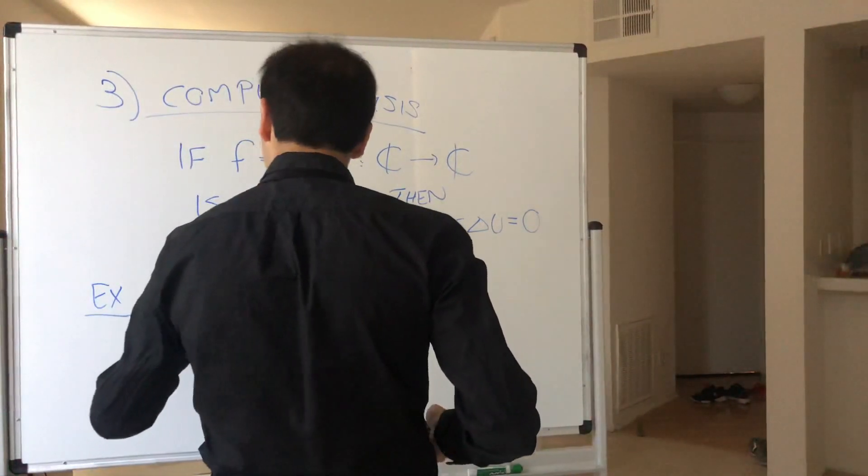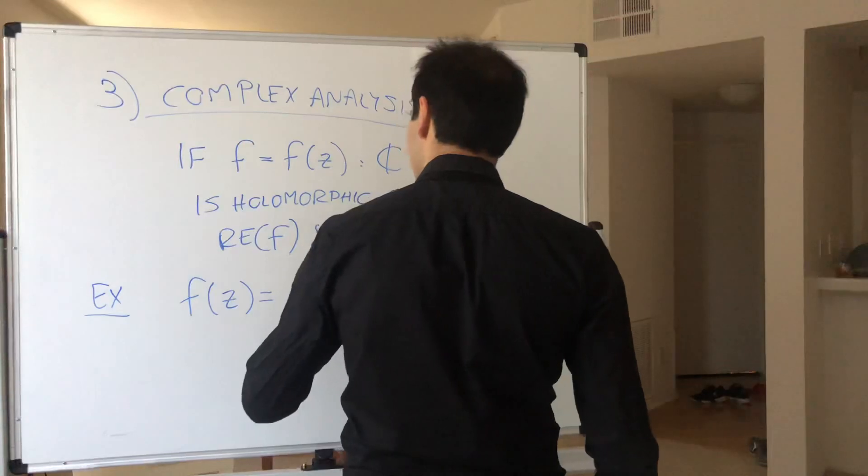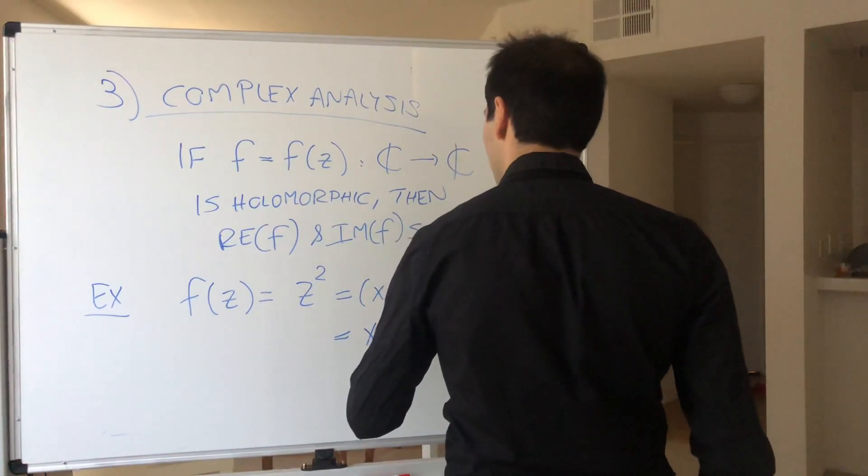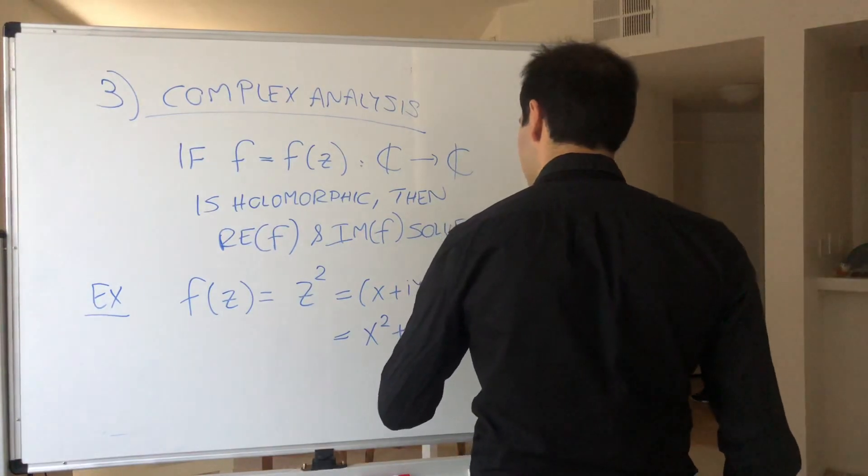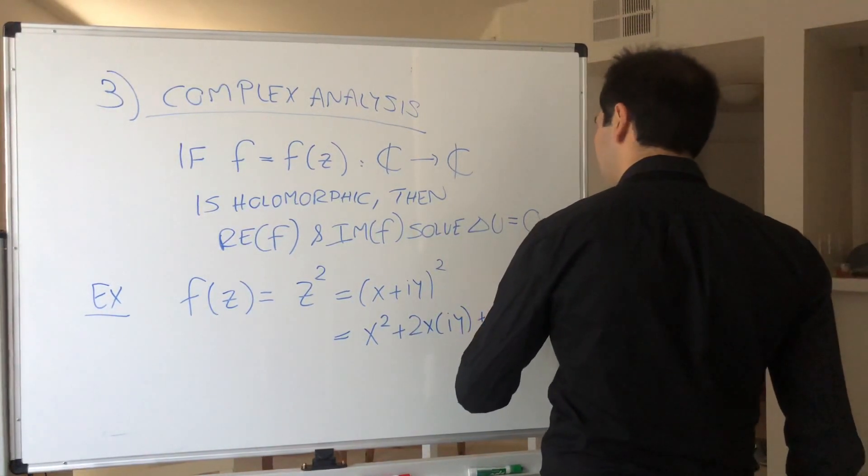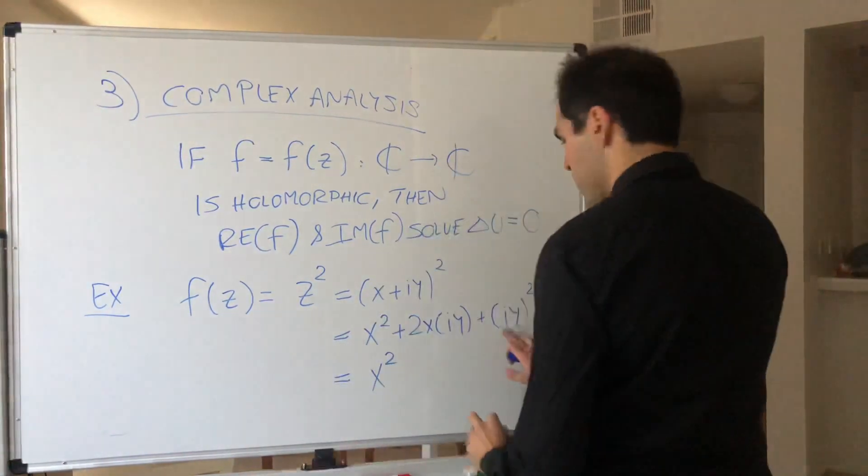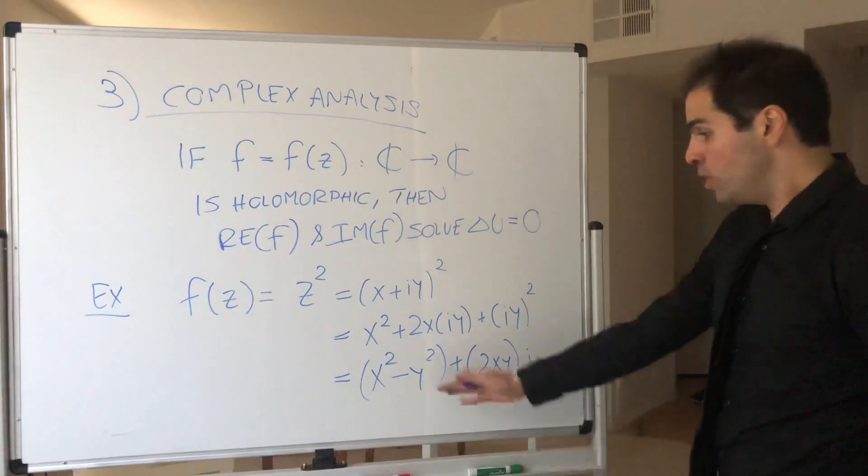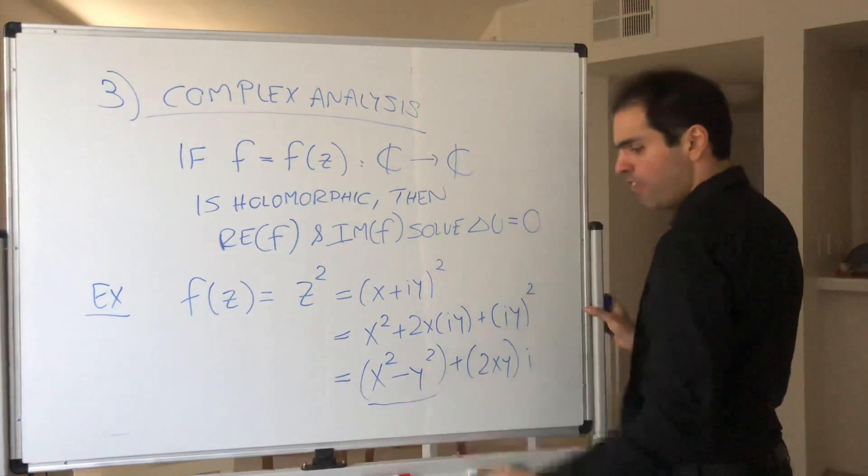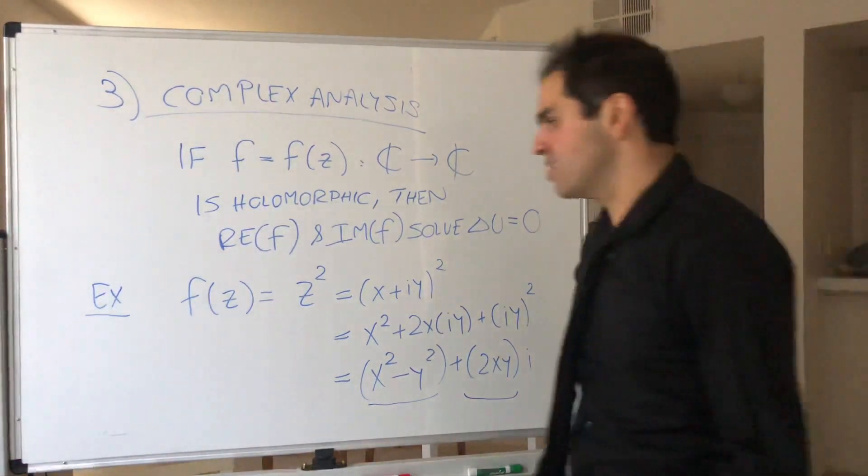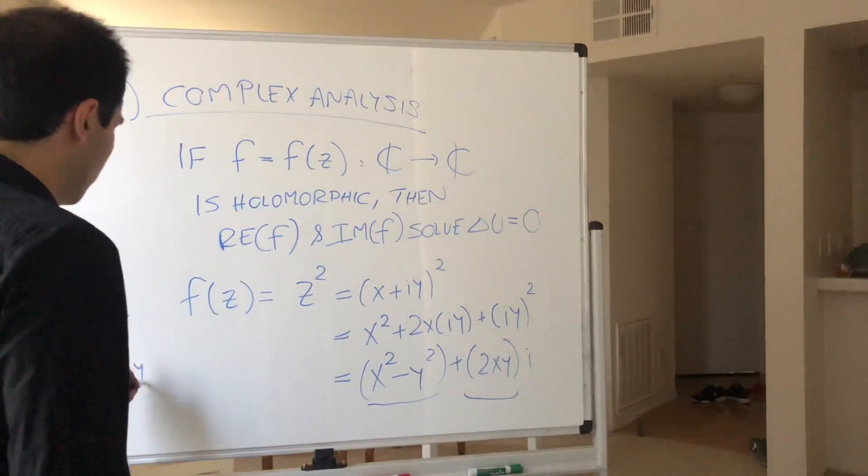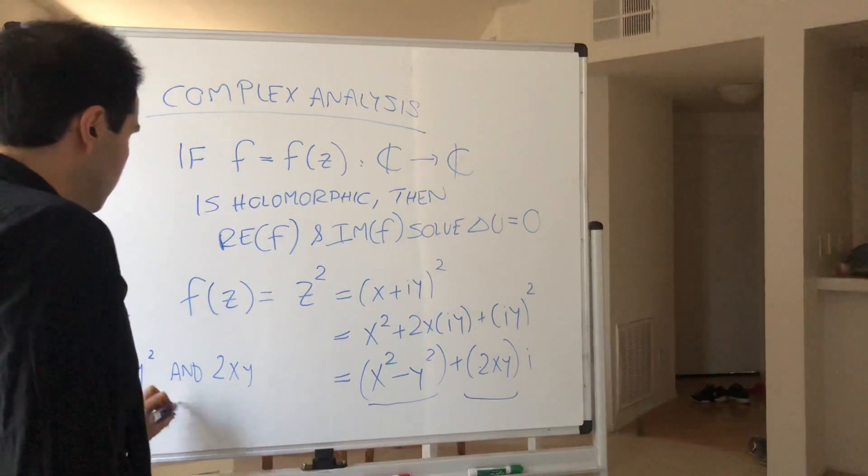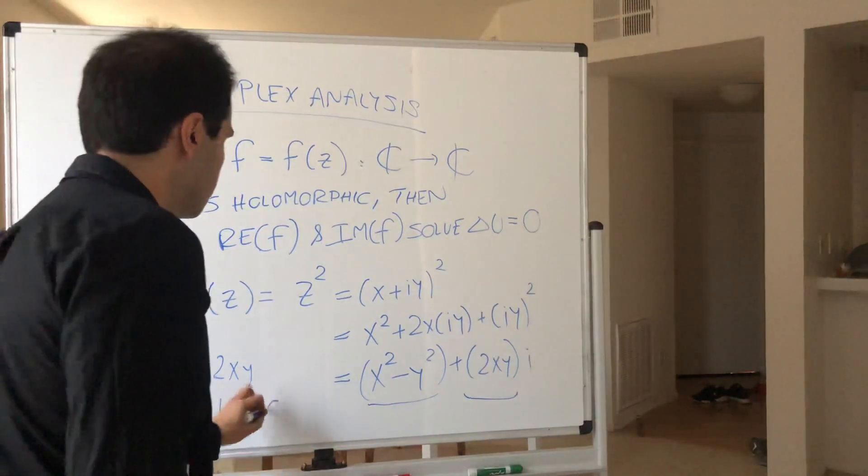For instance, let's take the squaring function f of z equals z squared, which is x plus iy squared. So x squared plus 2x iy plus iy squared, which becomes x squared minus y squared plus 2xy i. What this is saying is that if you take the function x squared minus y squared and the function 2xy, they both solve Laplace's equation.